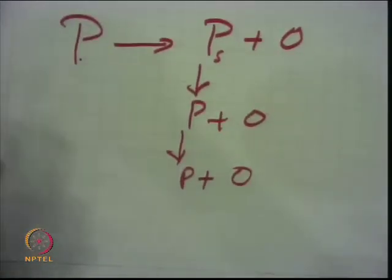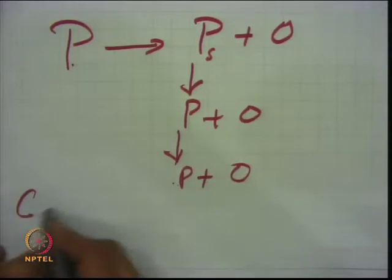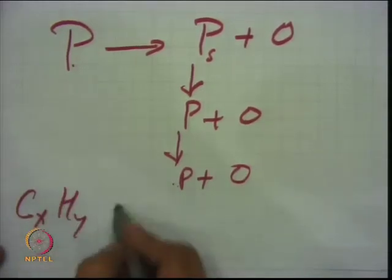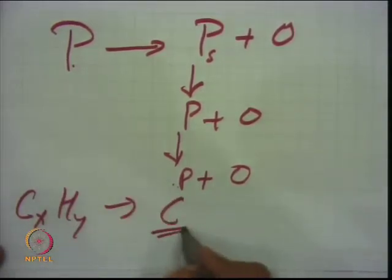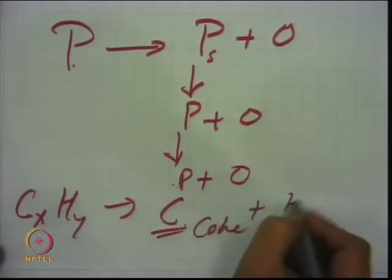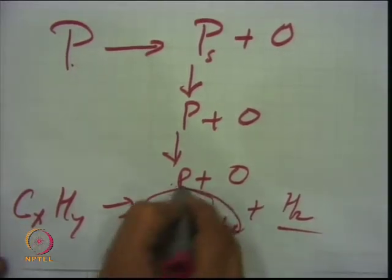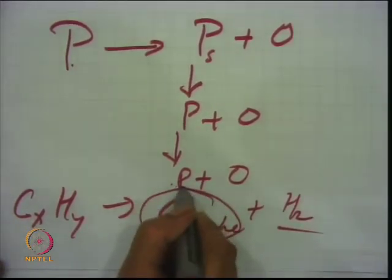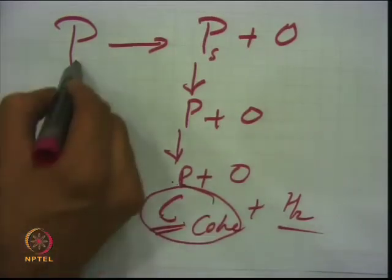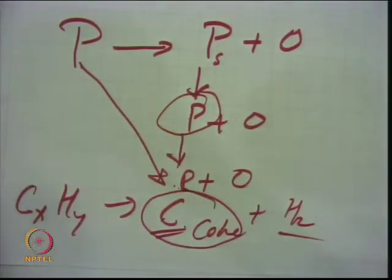You need to terminate that reaction. If you do not terminate it, ultimately any C_xH_y can give you just coke — rest is hydrogen. This is undesired in cracking. If you have very strong acid sites the chances are it will give you coke, whereas the desired product is some intermediate isoparaffin.